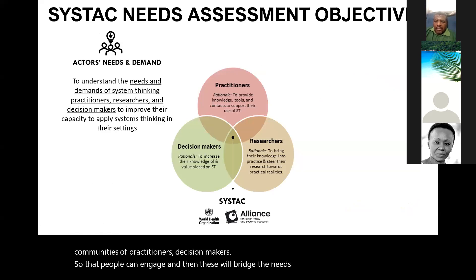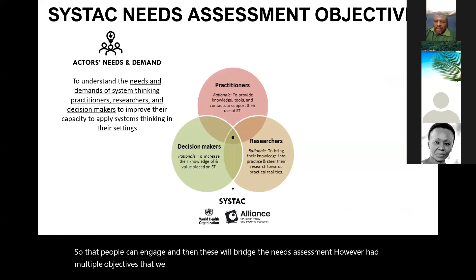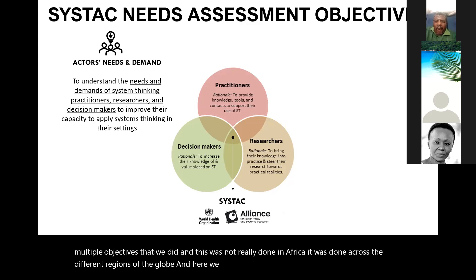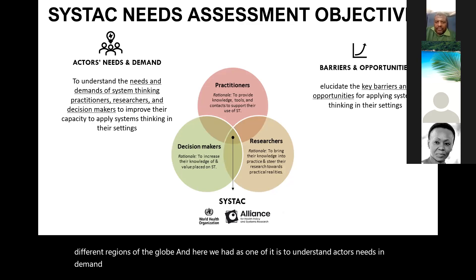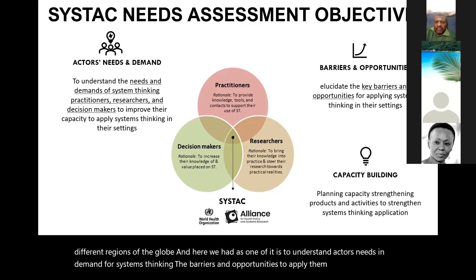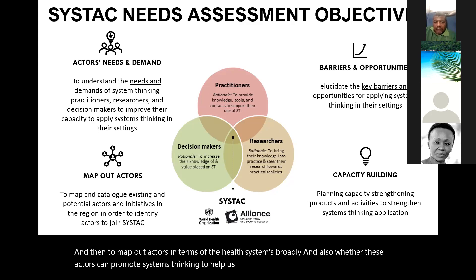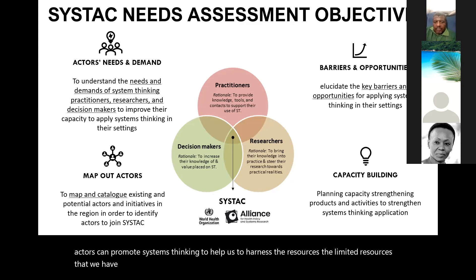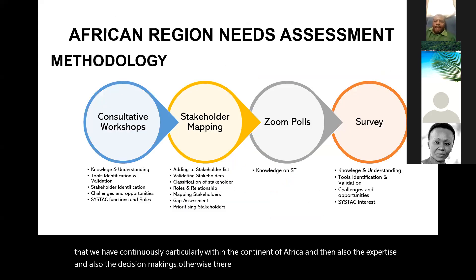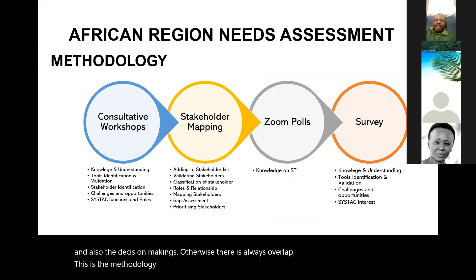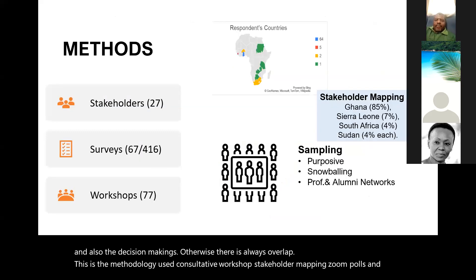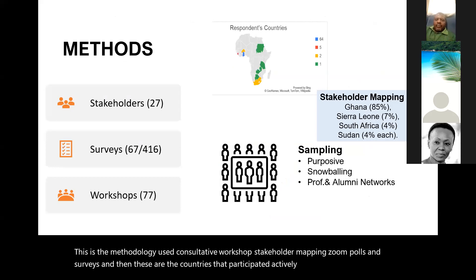The needs assessment had multiple objectives and was done across different regions of the globe, not only in Africa. Objectives included understanding actors' needs and demand for systems thinking, the barriers and opportunities to apply them, capacity building needs, and mapping out actors in the health system broadly — including whether these actors can promote systems thinking to harness limited resources, particularly within Africa, and improve decision making. The methodology used included consultative workshops, stakeholder mapping, Zoom calls, and surveys.